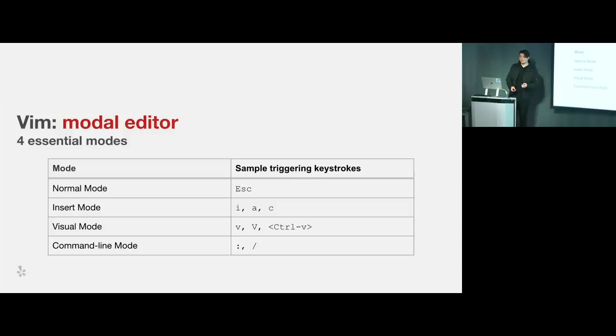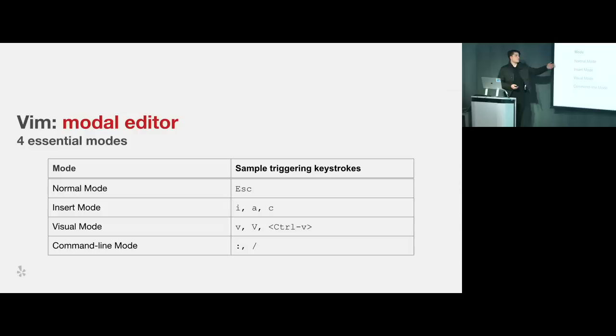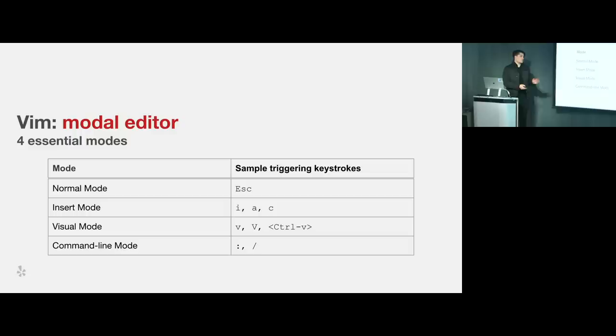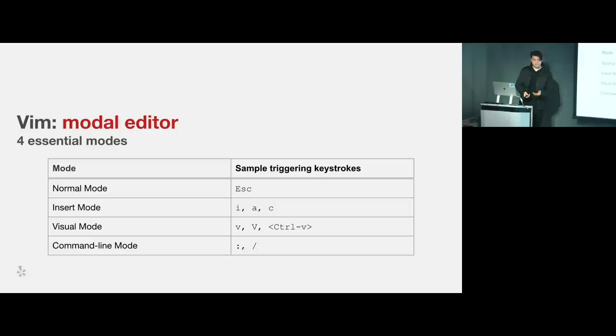Vim achieves this through four essential modes — there are actually seven, but these are most important. First is normal mode, where you do most of your textual interaction. Then insertion mode, where you can insert using I, append using A, and change using C — the mnemonics make it easy to remember. Then visual mode, which works with highlighted blocks of text: visual character mode, visual line mode, and visual block mode. Finally, command line mode, which lets you utilize traditional Ex commands like search and replace.